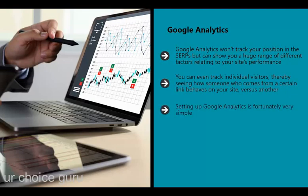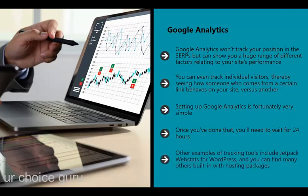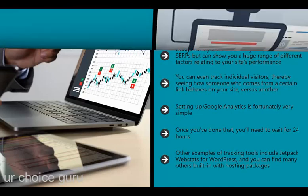Setting up Google Analytics is fortunately very simple. You'll need to place a small tracking code on each page of your site, which you can get from Google. You can do this manually or use a plugin or developer to handle it for you. Once done, wait 24 hours for Google to collect some basic data. You'll then set up a view - called a lens - which will include the stats you're interested in. Other examples of tracking tools include Jetpack Web Stats for WordPress, and many others built in with hosting packages.